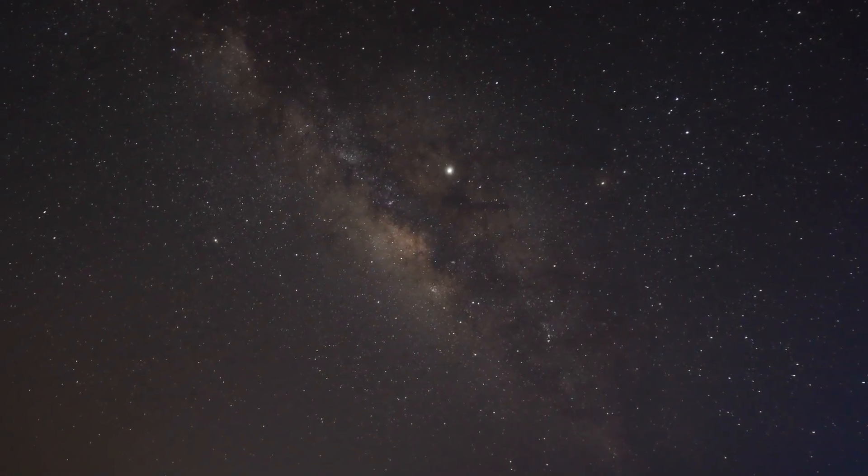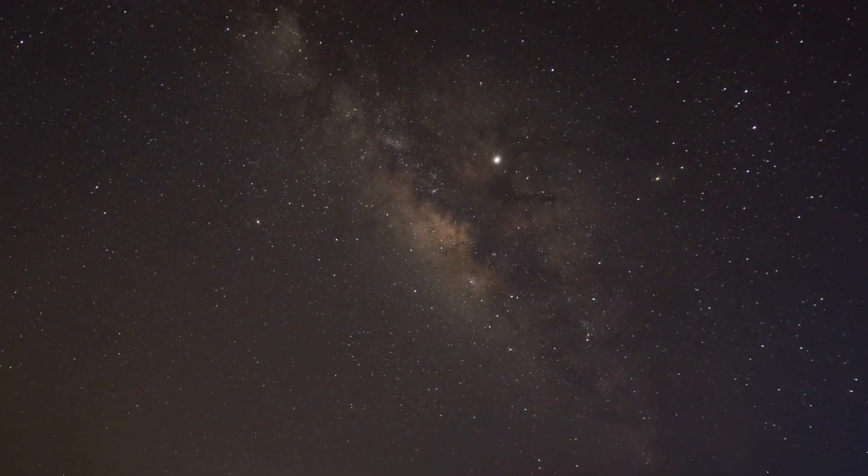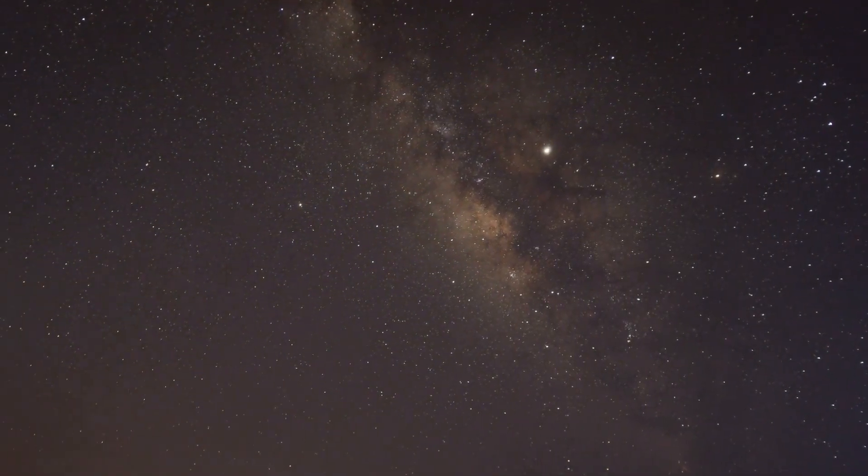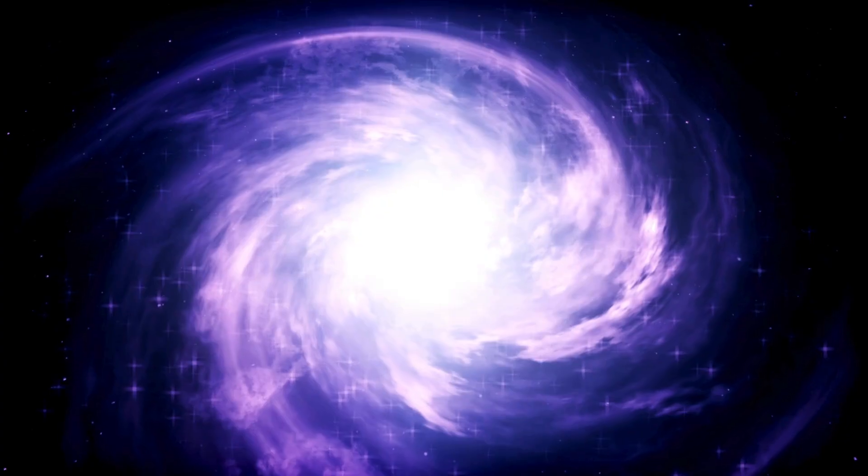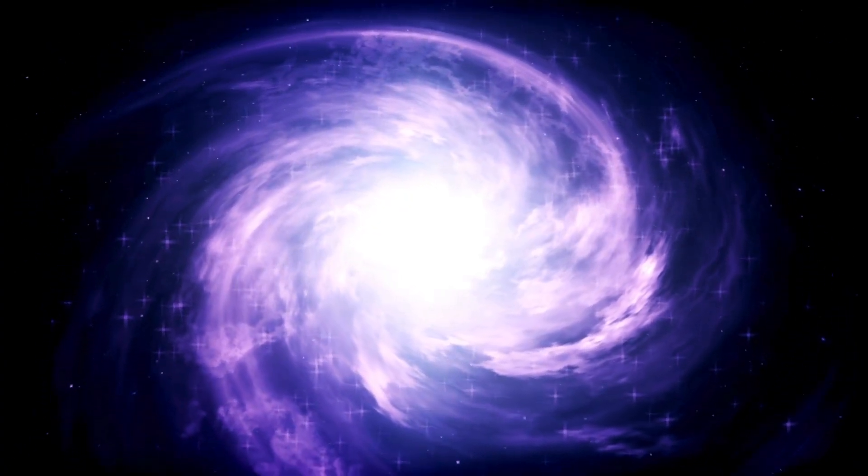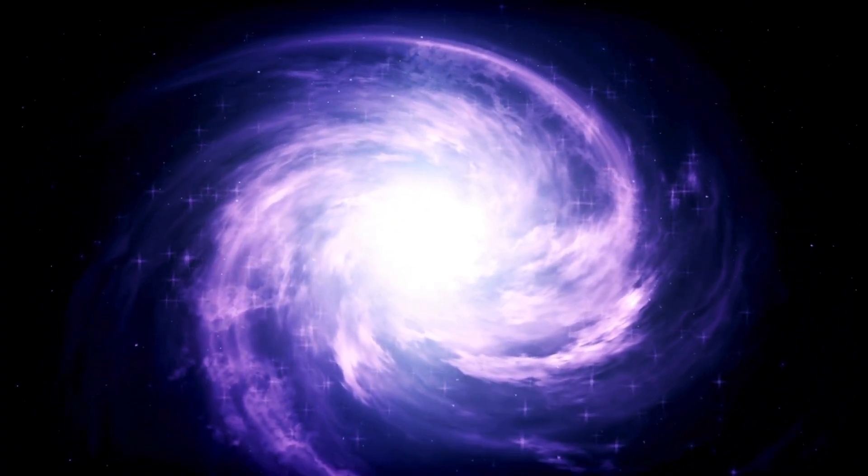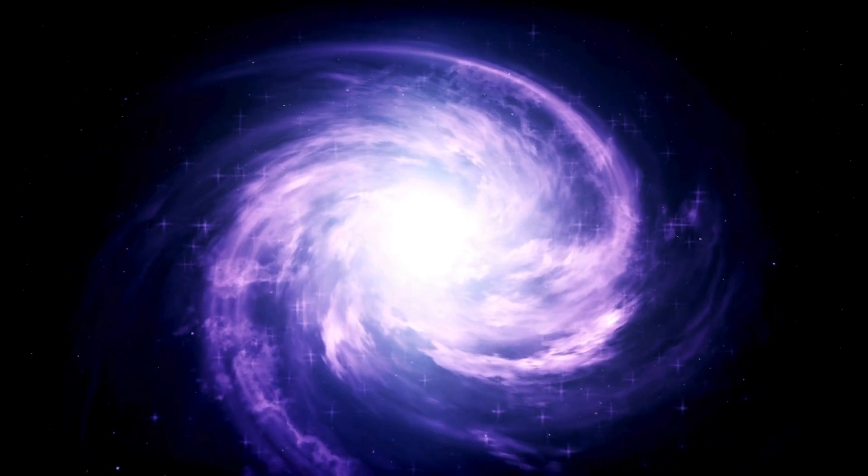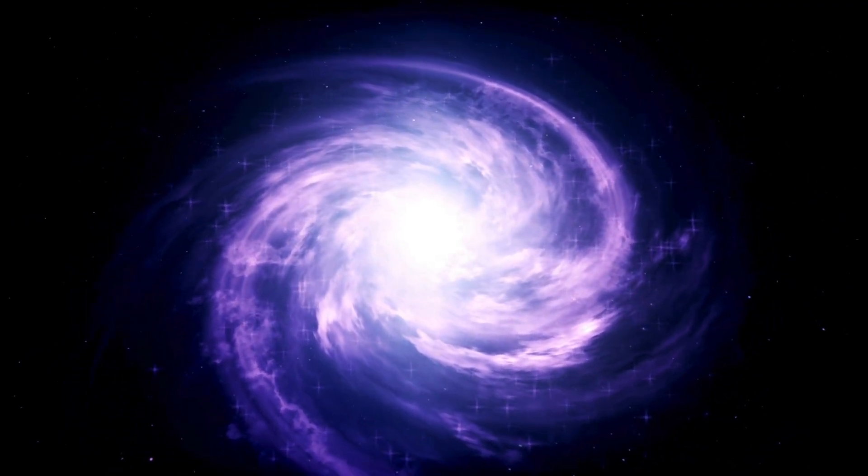One theory is that the Milky Way contains less dark matter than we thought. Dark matter, though invisible, plays a major role in how gravity behaves on a cosmic scale. Another possibility is that our understanding of how dark matter is distributed across the universe is flawed.